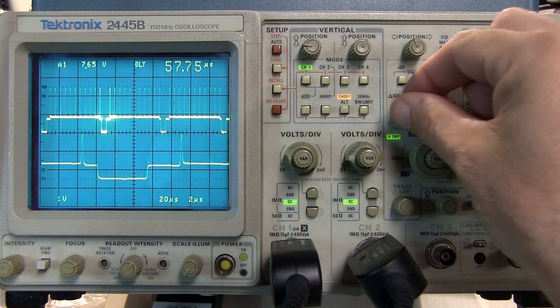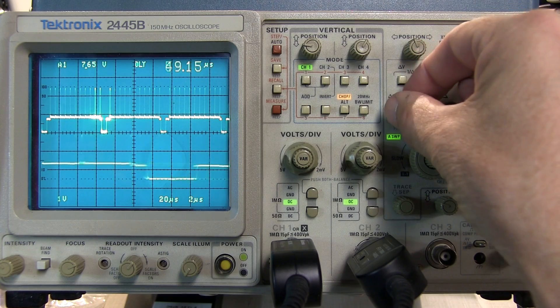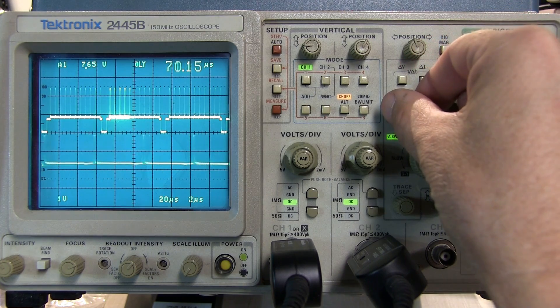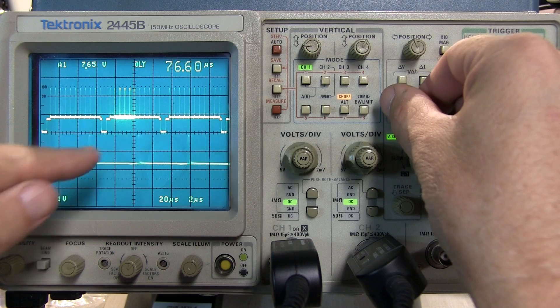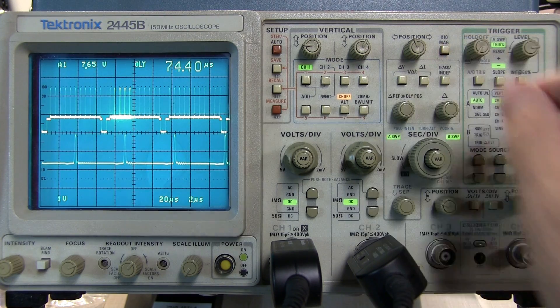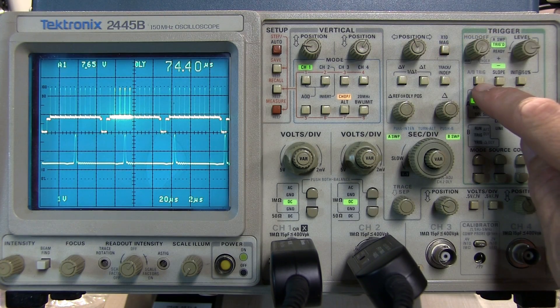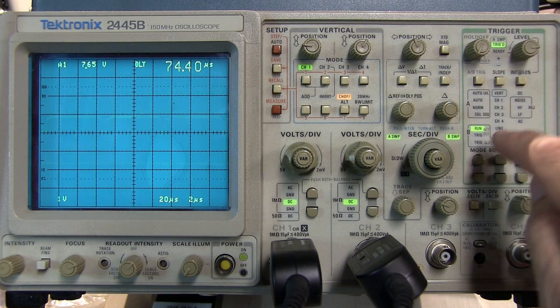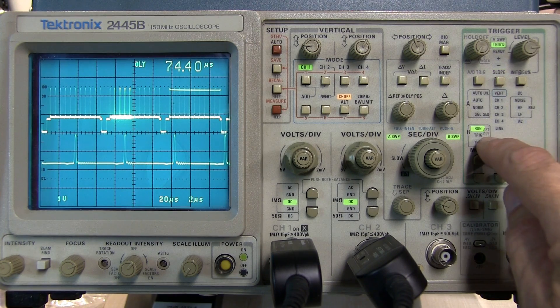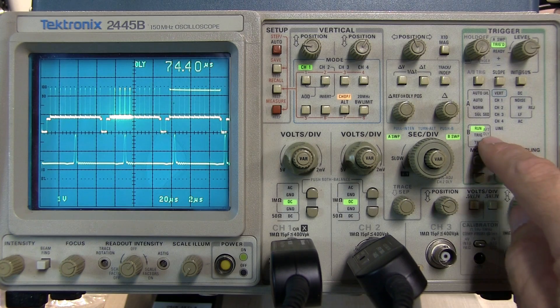So right now we've been using a mode where the B time base literally just runs or sweeps after the delay setting that we've dialed in. Now if we hit the AB trigger button we can then select the B trigger to run after delay which is what it's set to right now. If I hit the button down here I can tell it to be triggered after delay.